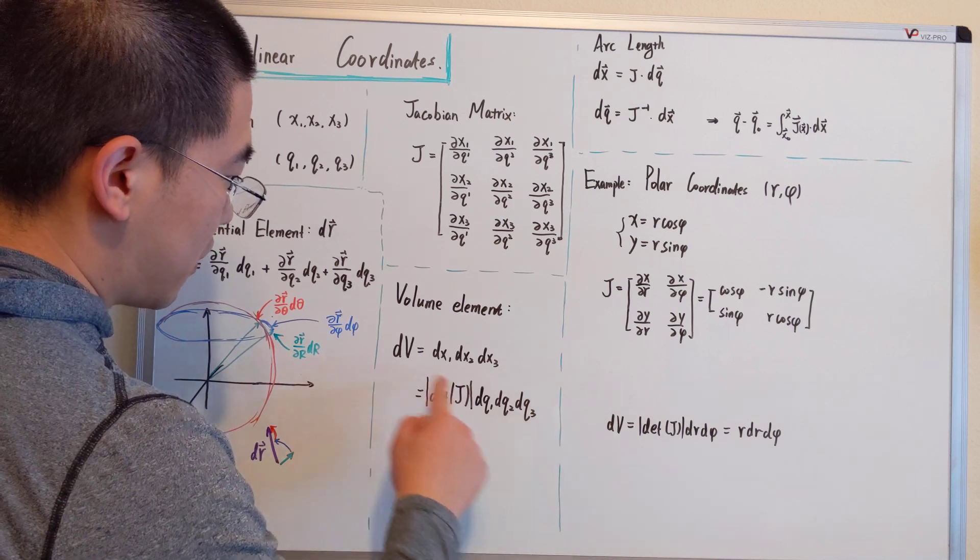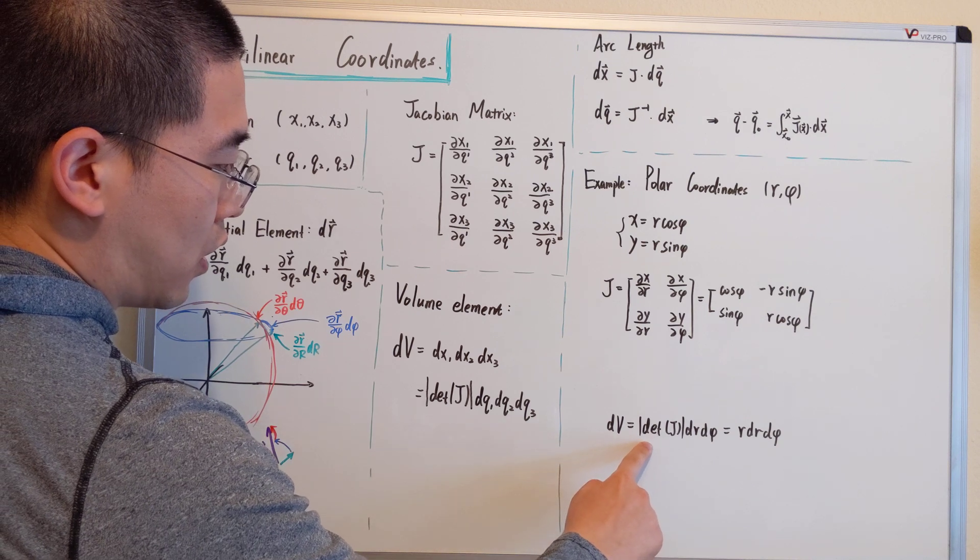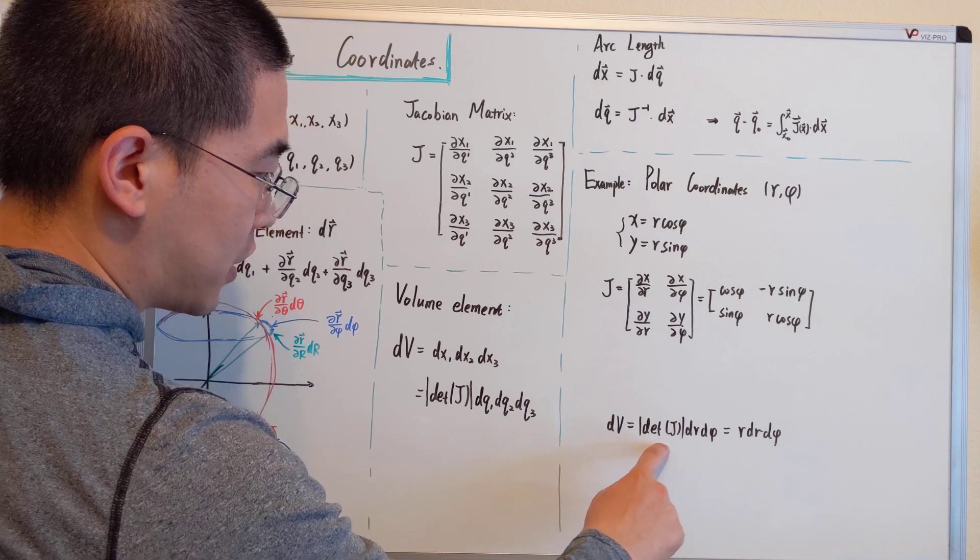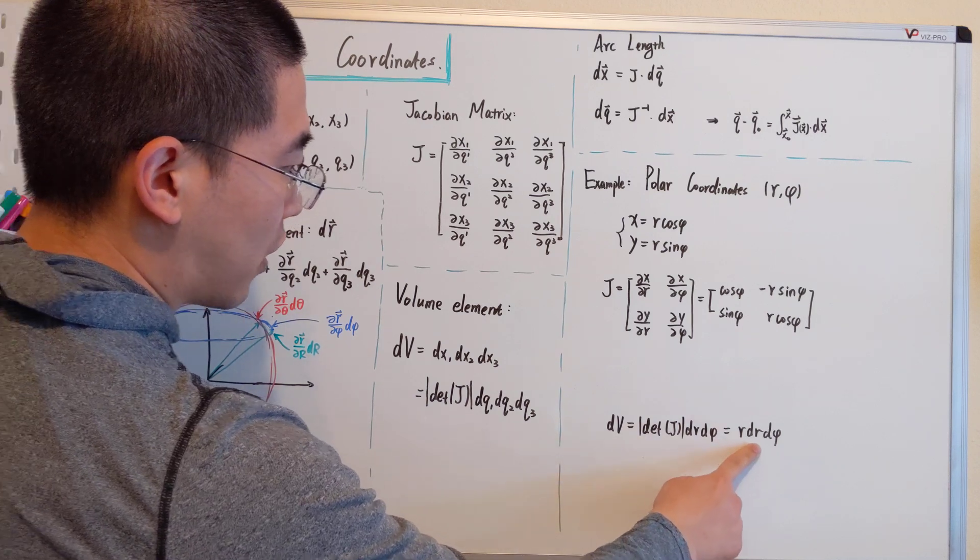For the volume element, dv will become dv equals absolute value of determinant of J times dr dphi, which equals r dr dphi.